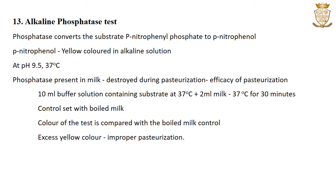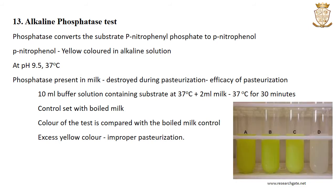The tubes are closed, mixed, and incubated at 37 degrees Celsius for 30 minutes. After 30 minutes, the color of the test tube is compared with the boiled milk control. The intensity of color should be the same in both tubes. Any excess yellow color in the test tube compared to the boiled milk control indicates improper or faulty pasteurization.